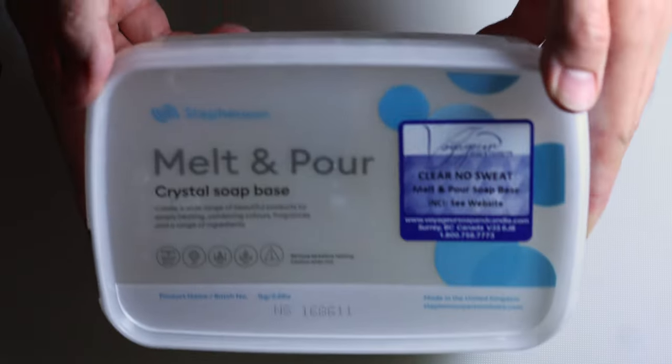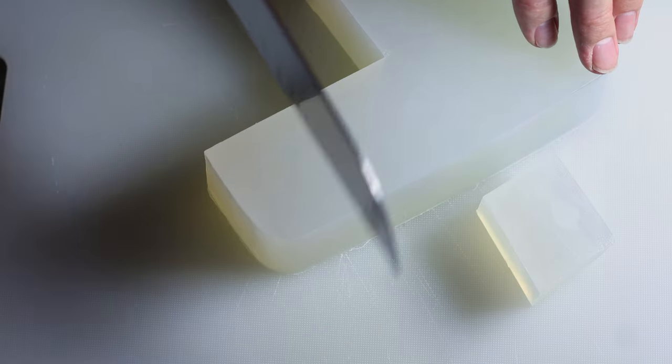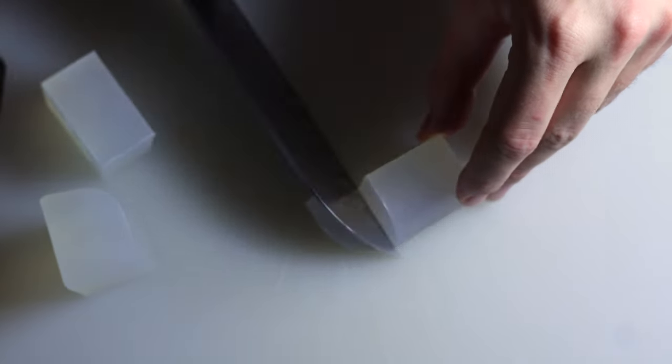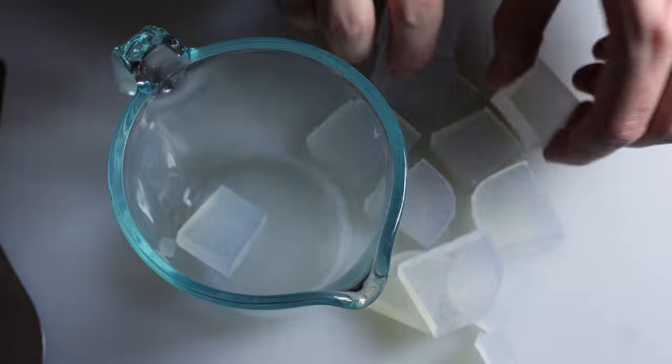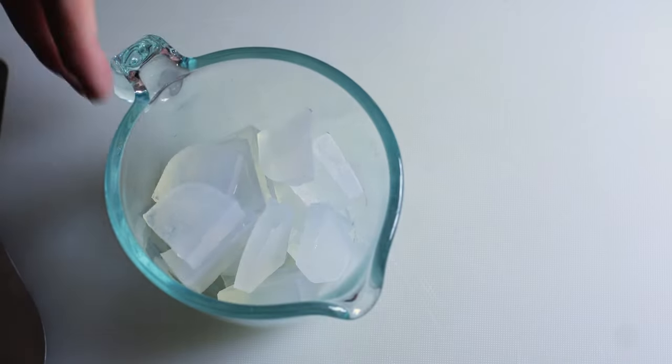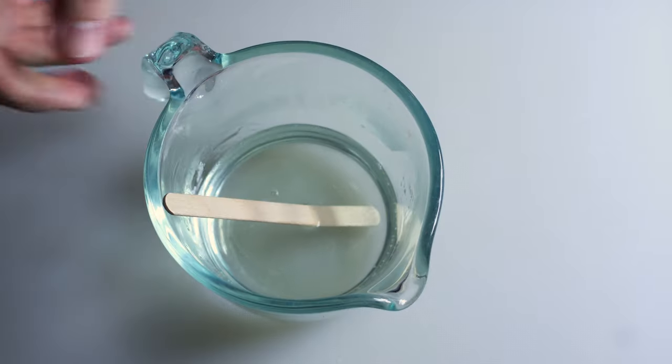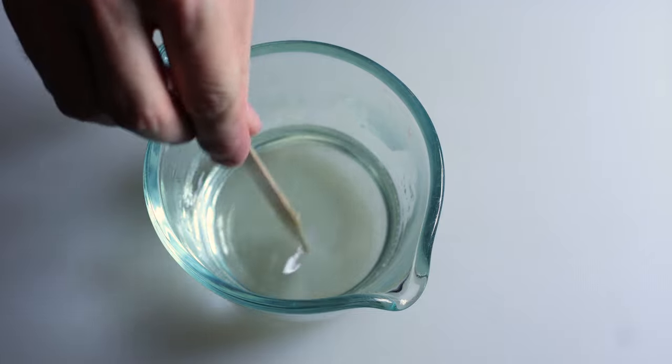While the silicone cures, I'm gonna get started with my gingerbread people. I'm using clear No Sweat Melt & Pour base from Voyager Soap & Candle, which is where I get most of my supplies from. I'm gonna chippity chop, and then those chunks get thrown into the microwave. To give these gingerbread people complexion, I'm gonna throw in some brown oxide.